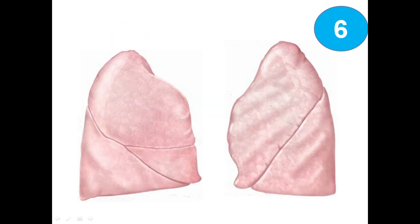Now we can see the anterior view of the lungs. Here is the left lung, and here is the right lung. The most superior portion is the apex, and the most inferior is the base. On the left lung we can see the upper lobe.